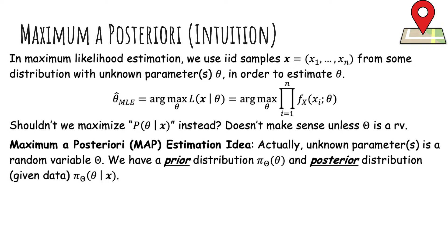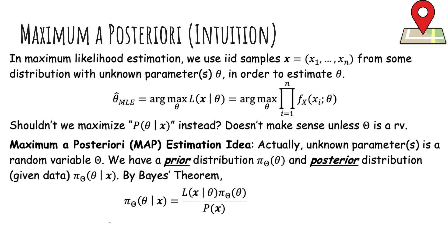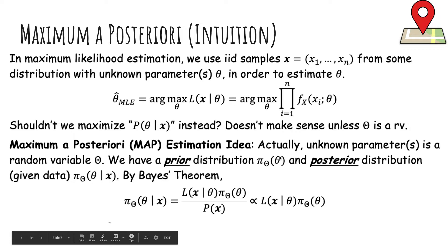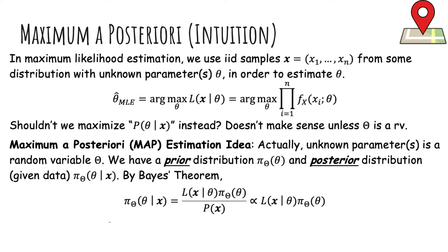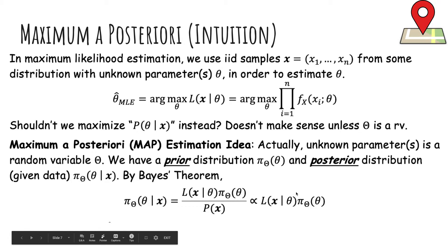Unlike maximum likelihood, where we assume theta was just some fixed number that would never change, now since theta is a random variable we have a prior distribution π(θ) — our belief on theta before we know anything — and a posterior distribution π(θ|x), which is our updated belief on theta given that we observe the data. By Bayes theorem we can flip x and theta, and this is proportional to the numerator because when maximizing with respect to theta, the denominator is a constant that doesn't depend on theta. So instead of maximizing the likelihood, we maximize this posterior belief.